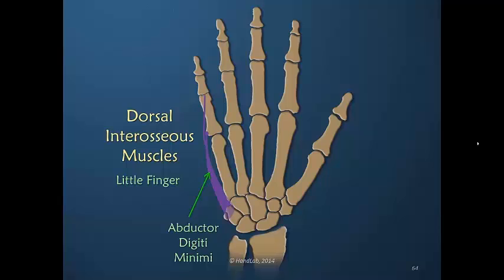The abductor digiti minimi serves the function of abduction on the little finger as well as providing influence into the extension of the little finger. We'll talk a little bit more about the little finger and its imbalance as we move along.